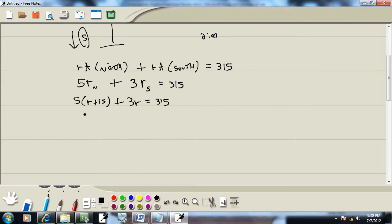At this point we want to solve this. This is a linear equation. 5 times r is 5r, 5 times 15 is 75, plus 3r is equal to 315. 5r plus 3r is 8r plus 75 equals 315.